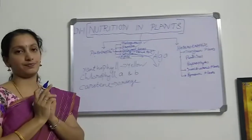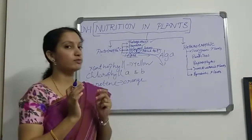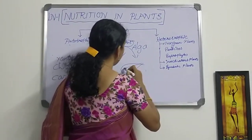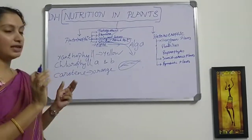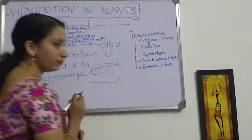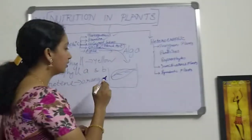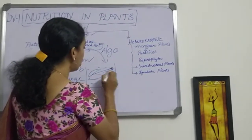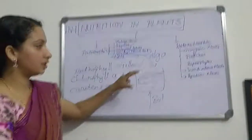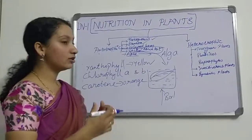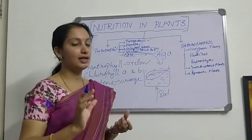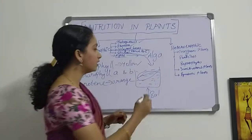Only one thing is left under autotrophic mode of nutrition: the starch test. How do we perform the starch test? First, take the leaf — pluck one healthy green color leaf. Put this leaf inside a beaker containing alcohol, then boil it. Once the temperature rises, the alcohol decolorizes the leaf, meaning it removes the green color pigment or any other pigment present in the leaf. Take out the leaf after some time — now this leaf is a decolorized leaf, a leaf without the presence of any colors.